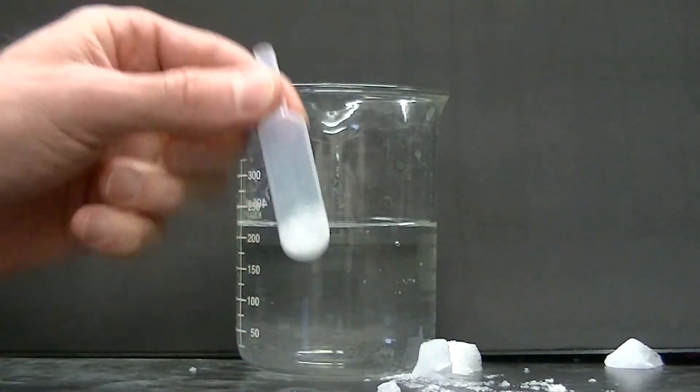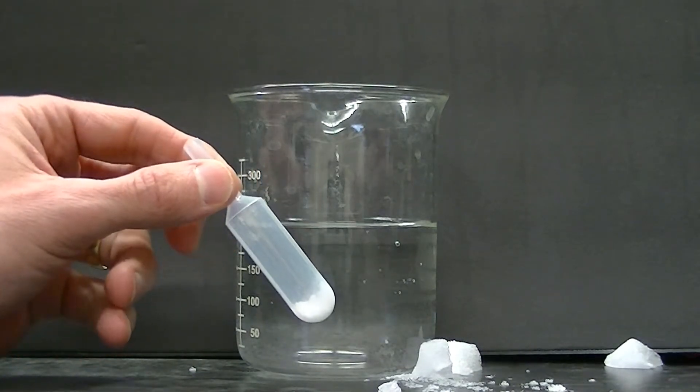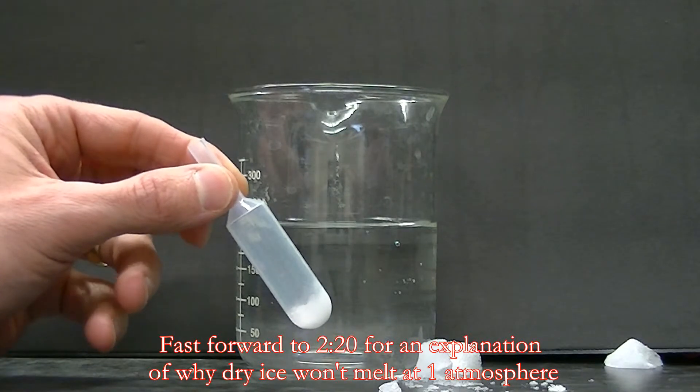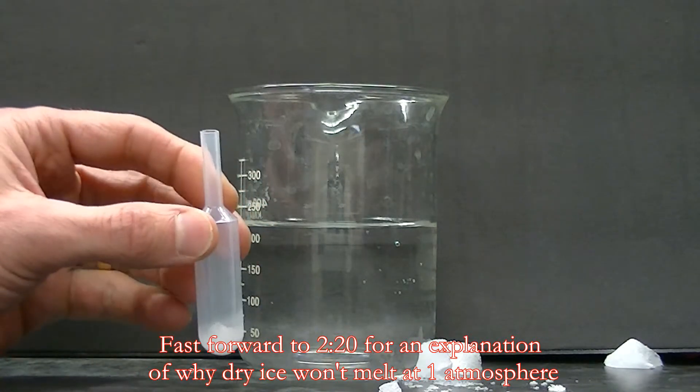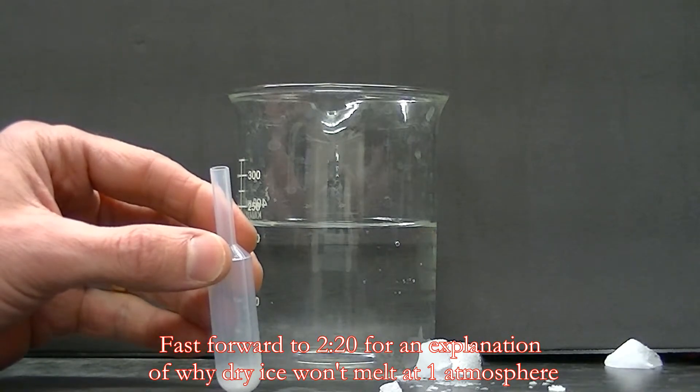Now what we need to do is we need to get the pressure in here above 5.1 atmospheres. Carbon dioxide will not melt under atmospheric pressure, the pressure has to get high enough above 5.1 atmospheres in order for the dry ice to form a liquid.